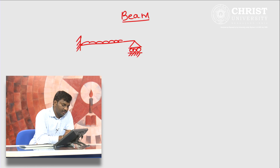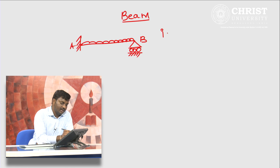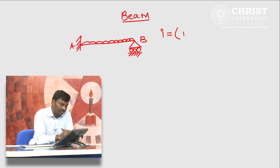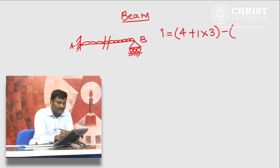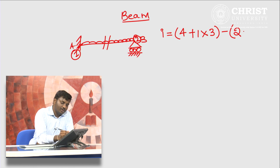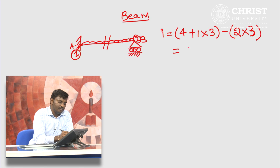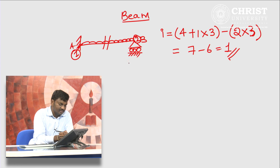Let it be subjected to UDL or any type of vertical loading. I have to find out the degree of static indeterminacy of this. We have 3 unknown reactions here and 1 there, therefore 4 support reactions. We have only 1 member, and in that member there are 3 unknowns: shear force, bending moment, and axial force. We have 2 joints and these are rigid joints, so 3 equations of equilibrium per joint. Therefore: 4 + 3 = 7 minus 6 equals 1. The degree of static indeterminacy is 1.